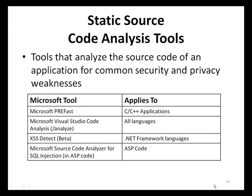The first category of application security testing tools is static source code analysis tools. These are tools that can scan an application's source code and alert testers to common detectable security vulnerabilities. Tools should not be used as a replacement for sound security development and testing practices, but rather as an addition to those practices.